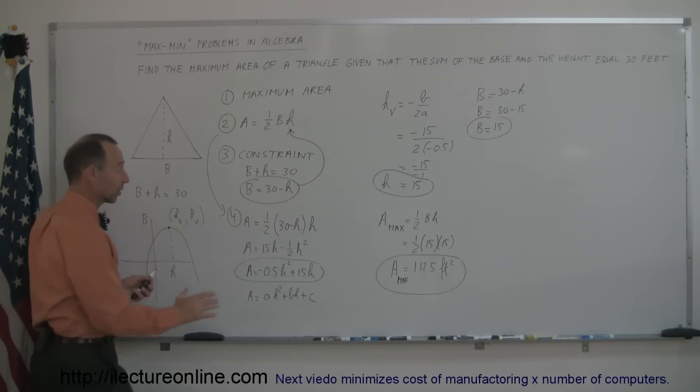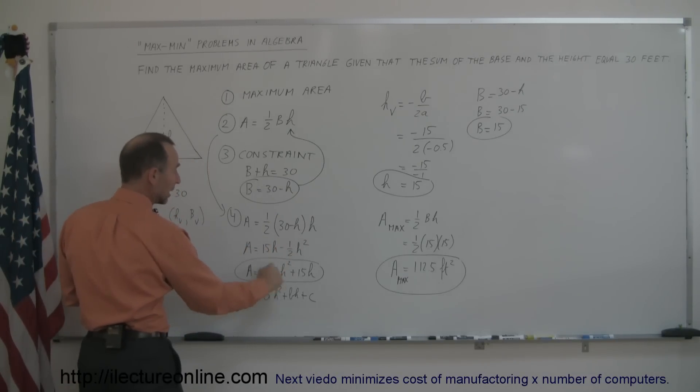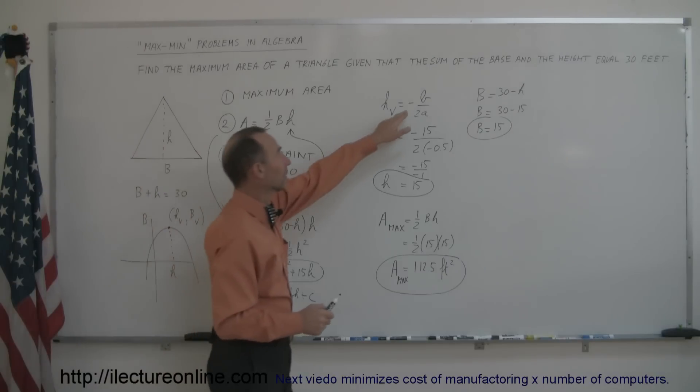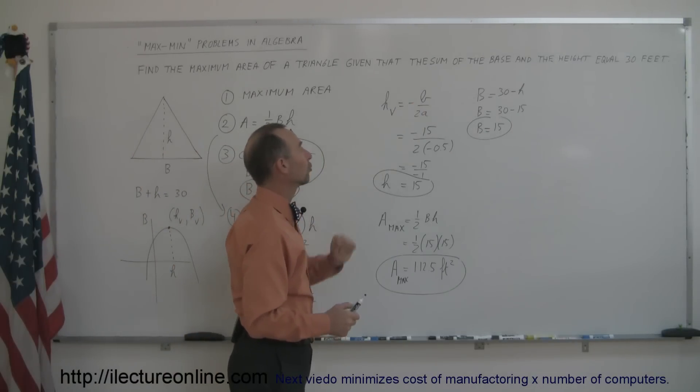You can see that this is a quadratic equation, writing the square term first, and realizing the square term is negative, I realize I'm going to have a parabola that opens downward that has a maximum value near the top here, and then realizing that the vertex, the h coordinate of the vertex can be found by finding minus b over 2a.